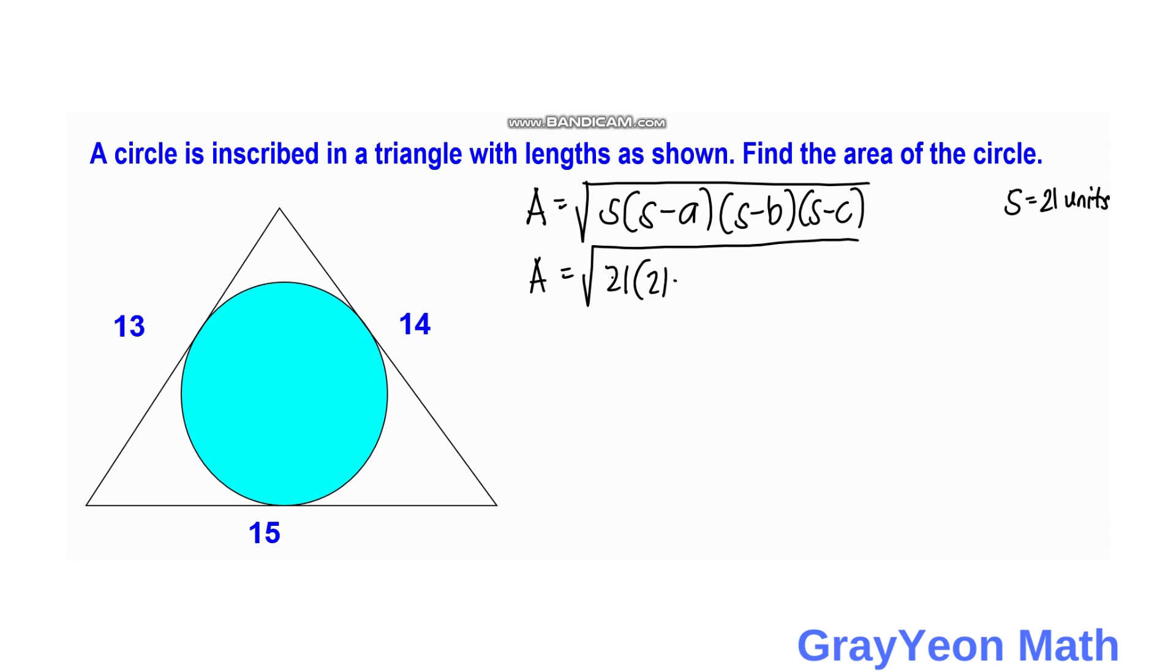Then 21 minus 13, then 21 minus 14, then 21 minus 15. So we have area equals the square root of 21.